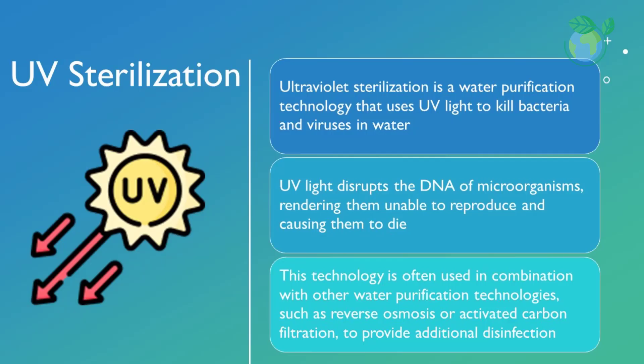Ultraviolet UV Sterilization is a water purification technology that uses UV light to kill bacteria and viruses in water. UV light disrupts the DNA of microorganisms, rendering them unable to reproduce and causing them to die. This technology is often used in combination with other purification technologies, such as reverse osmosis or activated carbon filtration, to provide additional disinfection.